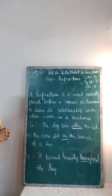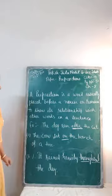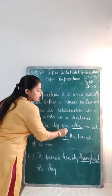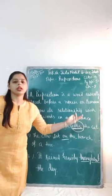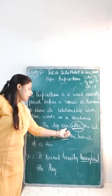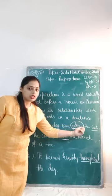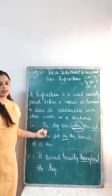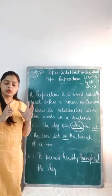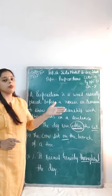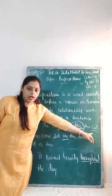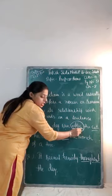Let's understand with the help of an example: 'The dog ran after the cat.' Here, 'after' is the preposition. If I remove this word — 'The dog ran, the cat' — it is not making any sense. Cat is a noun, and the word 'after' is showing the relationship of a noun with other words in a sentence. Prepositions are always placed before a noun or a pronoun. After is placed before the noun 'cat.'